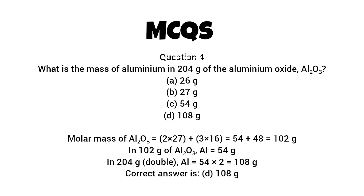Question 4. What is the mass of aluminum in 204G of aluminum oxide Al2O3? Options: A. 26G. B. 27G. C. 54G. D. 108G. Molar mass of Al2O3 equals 2 times 27 plus 3 times 16 equals 54 plus 48 equals 102G. In 102G of Al2O3, Al equals 54G. In 204G, double. Al equals 54 times 2 equals 108G. Correct answer is D. 108G.